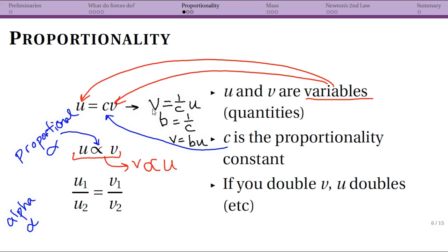Well just imagine rearranging this equation. You get that v is equal to 1 over c times u. Well let's just redefine 1 over c to be b. Well now v is equal to b times u. Again, perfectly a proportional relationship. So this is reversible. It has a symmetry.